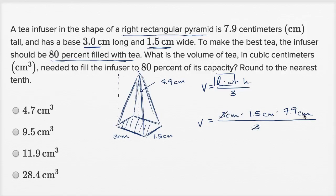That cancels with that. You have centimeters times centimeters times centimeters, it's going to be centimeters cubed. So your volume is going to be 1.5 times 7.9 centimeters cubed, or cubic centimeters. Now that's the volume of the entire fancy tea infuser.